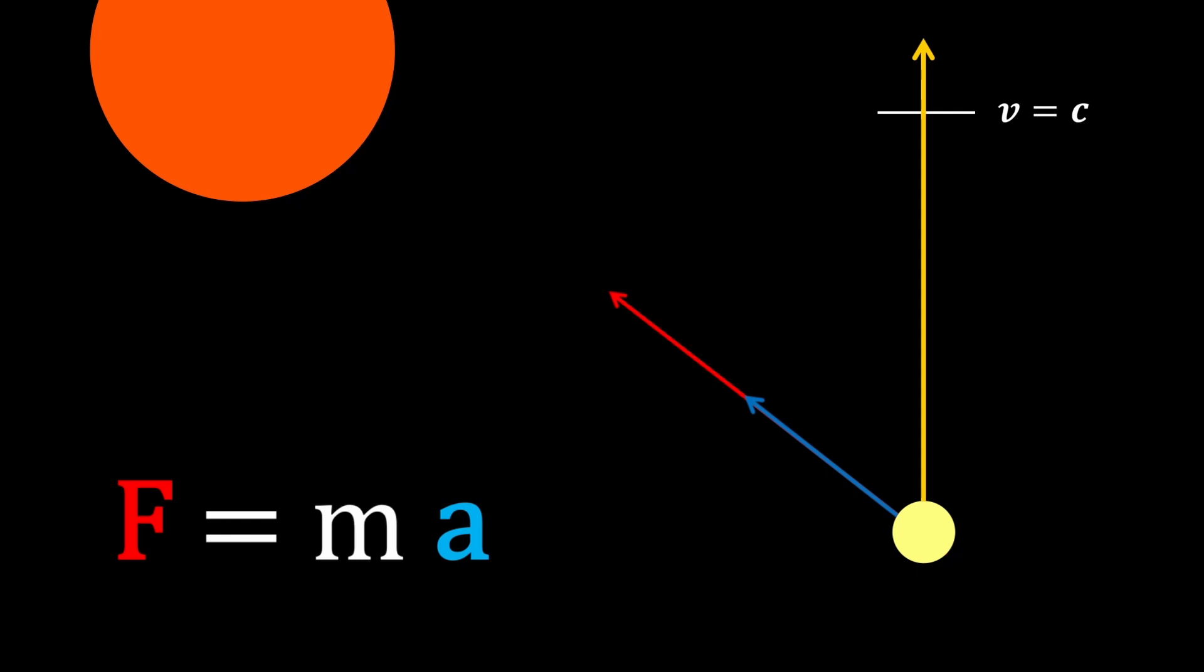But what happens when we adopt the upgrade, when we use F equals MK instead of F equals MA? At low speeds, the acceleration vector in blue behaves just like the path curvature vector K in purple. Both vectors point toward the sun, and Newton's theory stays intact.